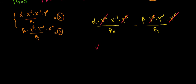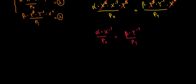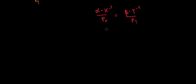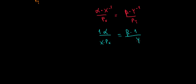After canceling, we have α·x^(−1) / px = β·y^(−1) / py. Since x^(−1) = 1/x and y^(−1) = 1/y, we can write this as α/(x·px) = β/(y·py). We'll leave it here for this video — in the next video we'll continue and show the relationship that we've been building toward.